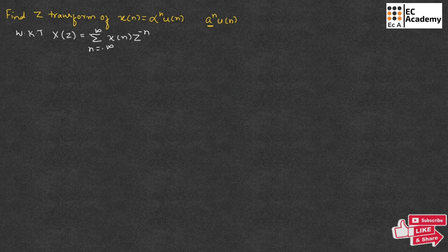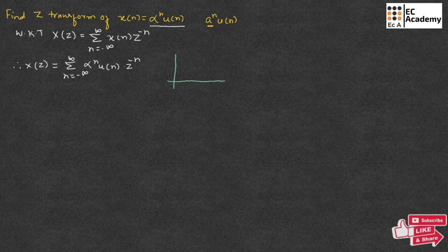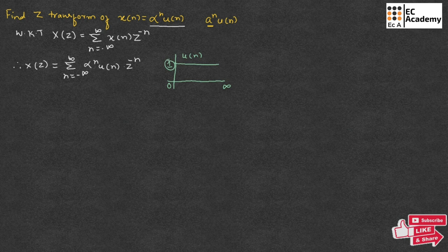In this formula, in place of x[n], let us put alpha to the power of n times u[n]. Therefore, we can write X(z) = summation from n = minus infinity to infinity of alpha^n times u[n] times z^(−n). We know the representation of u[n] — it equals 1 for n ranging from 0 to infinity, and 0 from minus infinity to 0.